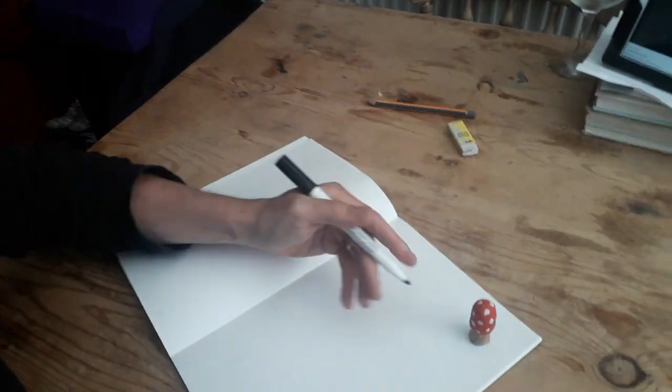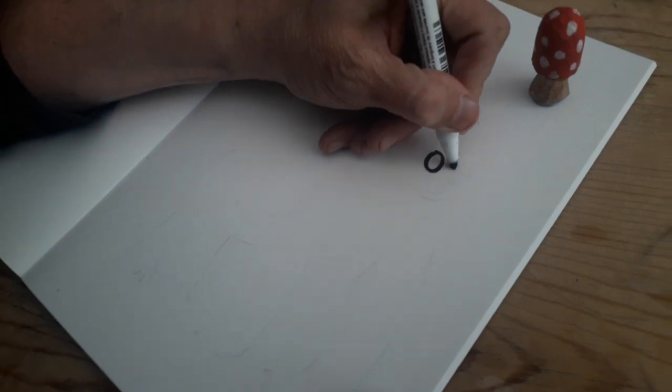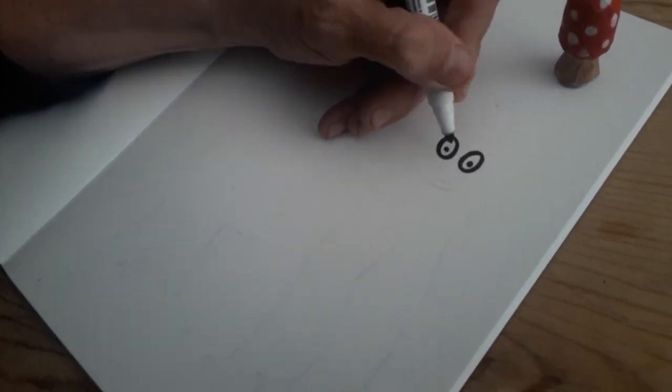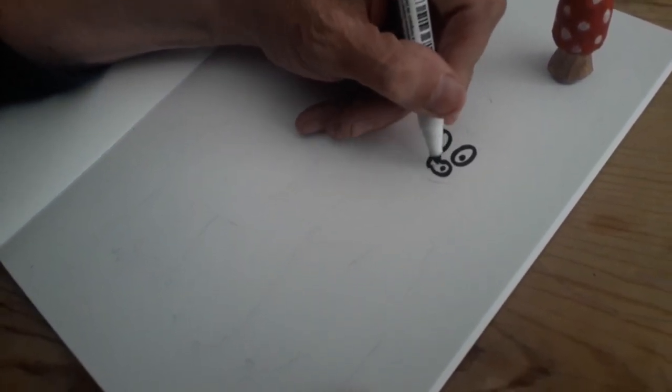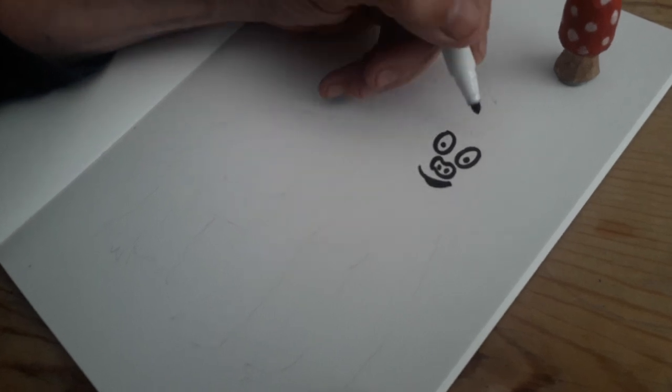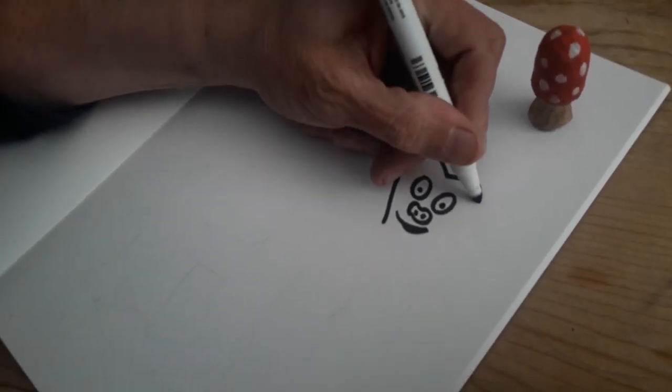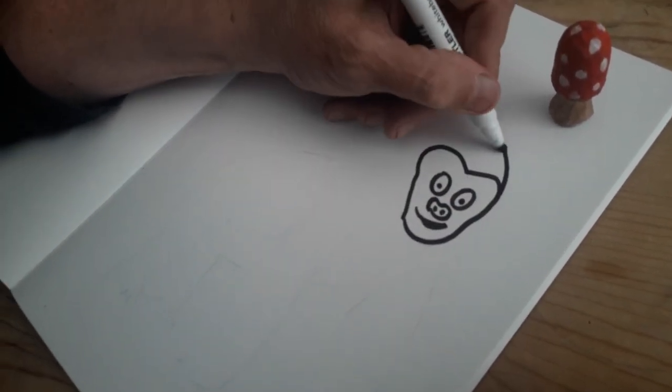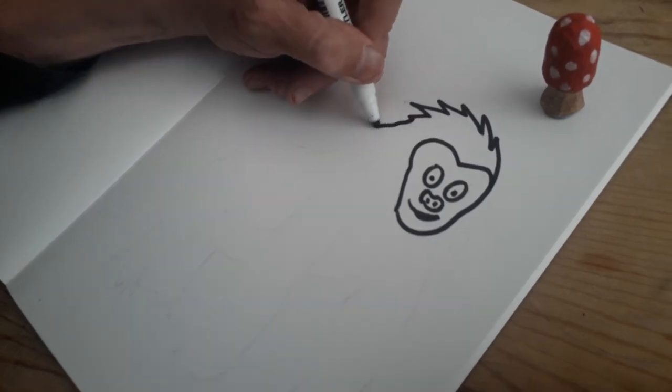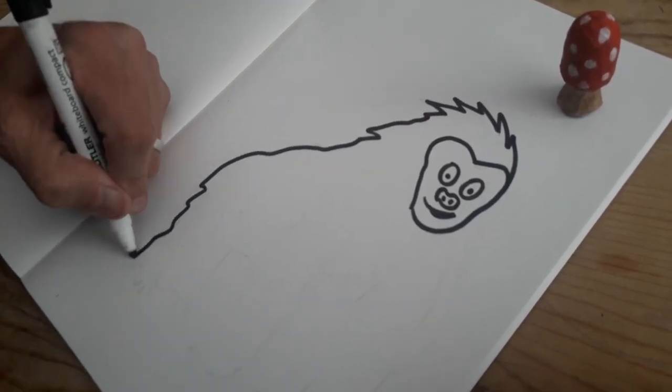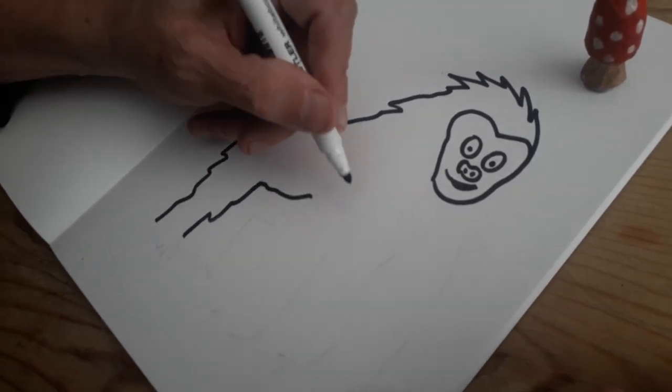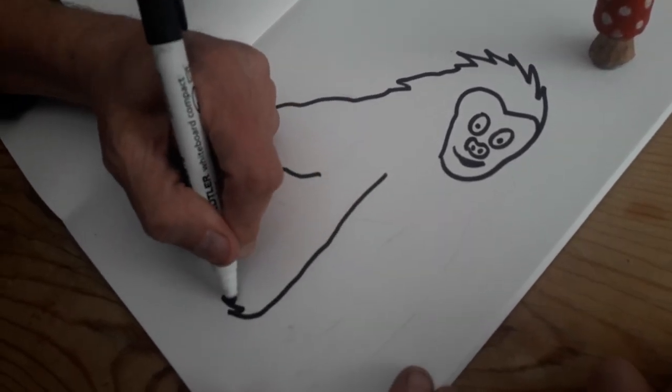Okay, we're going to draw a gorilla today. Let's start with two big eyes and a smiley mouth. It's smiling. This is the silverback gorilla, found in the forests of Africa, an endangered species.